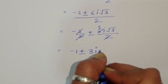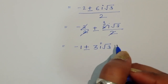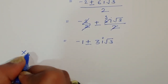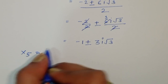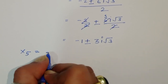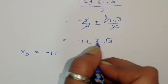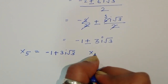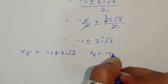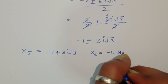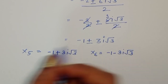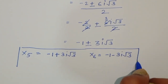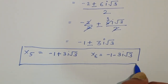So x₅ equals minus 1 plus 3i√3, and x₆ equals minus 1 minus 3i√3. These are the values of x₅ and x₆. In total we got 6 values of x: x₁, x₂, x₃, x₄, x₅, and x₆.